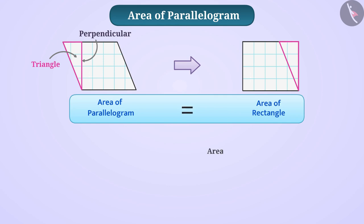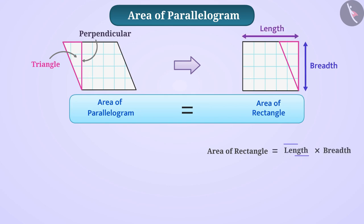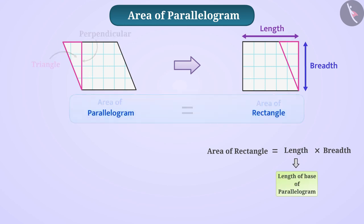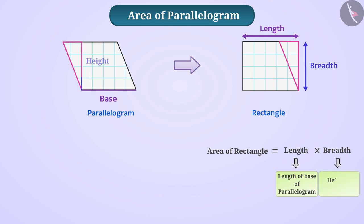We know that area of rectangle is equal to length multiplied by breadth. Here, length of rectangle is equal to length of base of parallelogram. The line on which the perpendicular is made will be considered as the base of the parallelogram. Similarly, breadth of rectangle is equal to height of parallelogram, which is the length of the perpendicular.